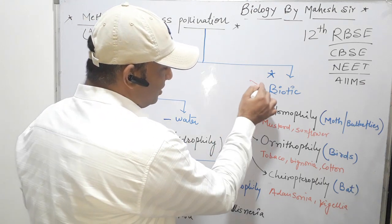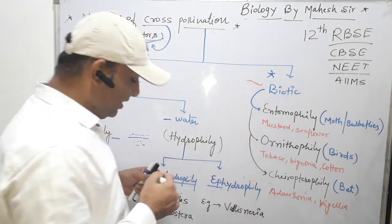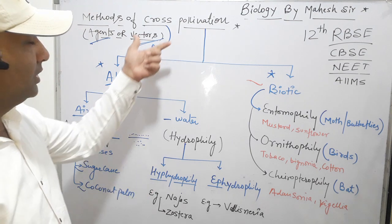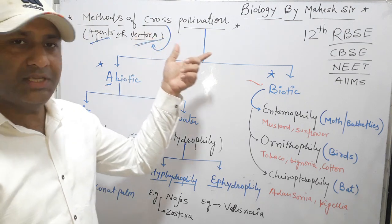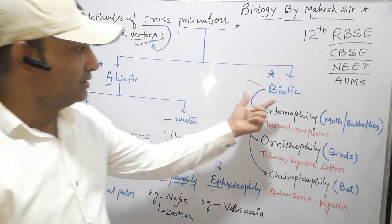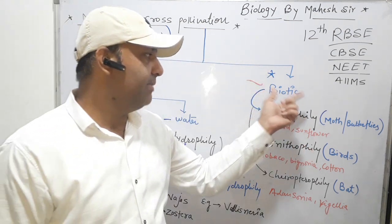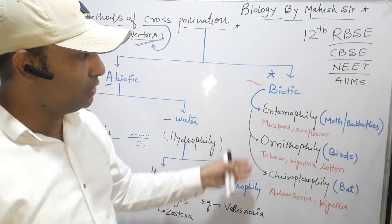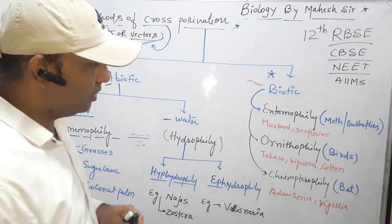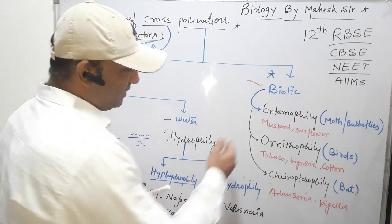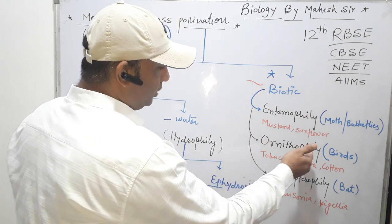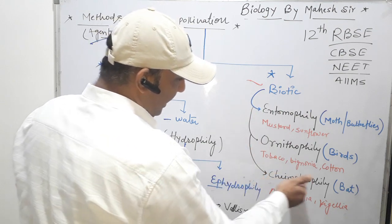Next is biotic agents, which means the process by which living organisms transport the pollen grain from the mature anther to the stigma. This is called biotic pollination. It can be further divided based on the type of organism: entomophily, ornithophily, and chiropterophily.